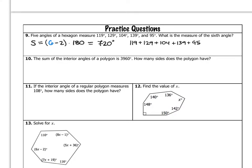If I add the first five angles, I end up with 586 degrees. So, 586 plus x equals 720. And 720 minus 586 is 134. That sixth angle is 134 degrees.